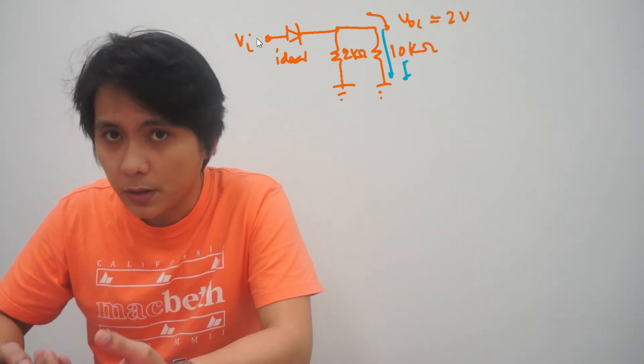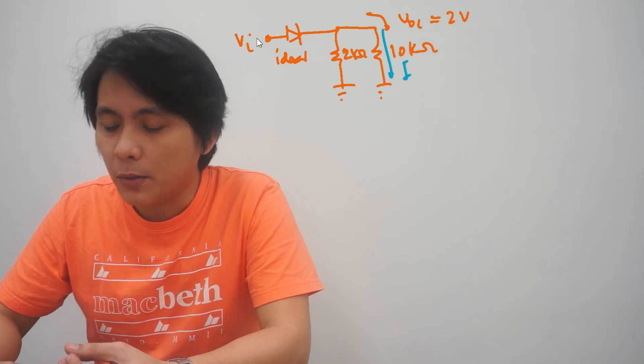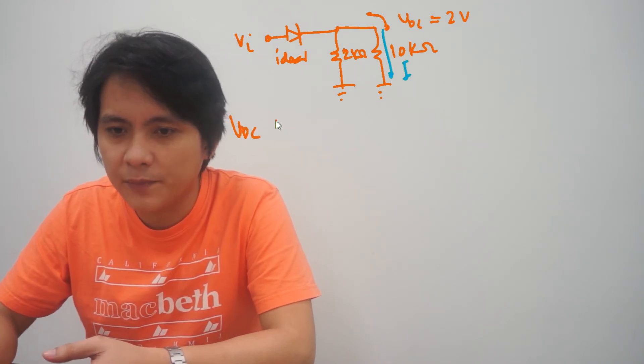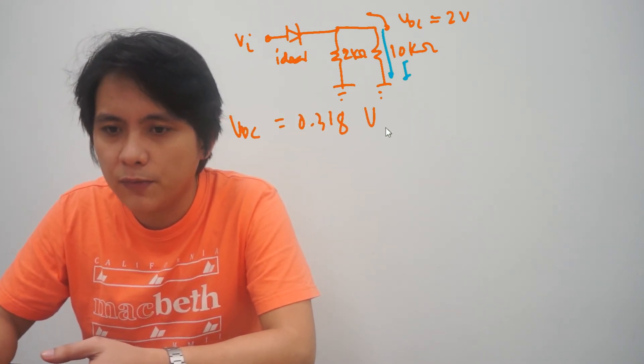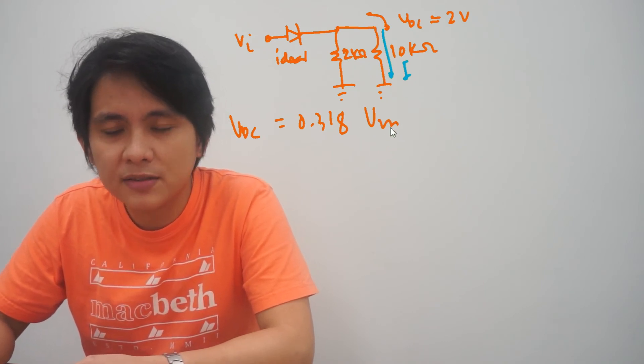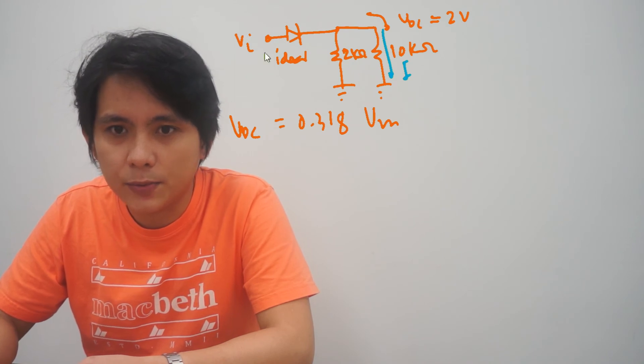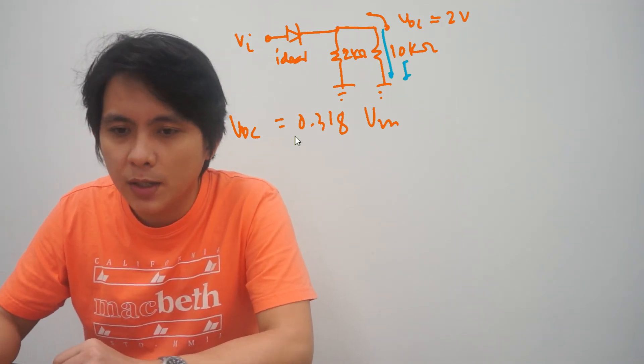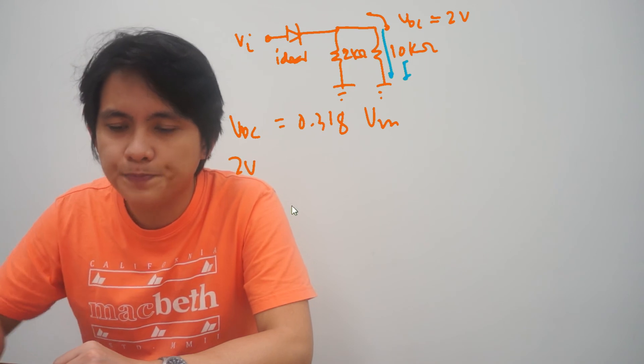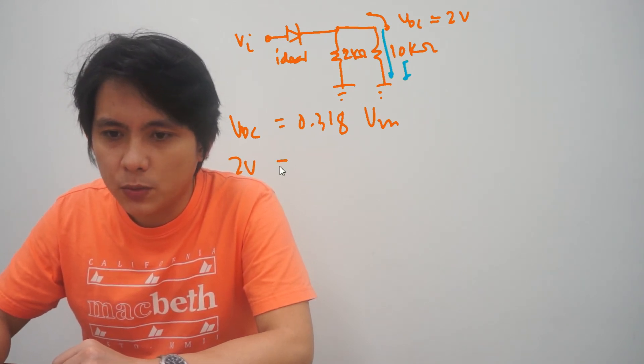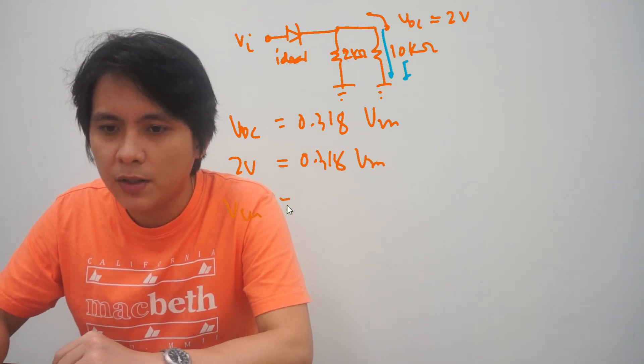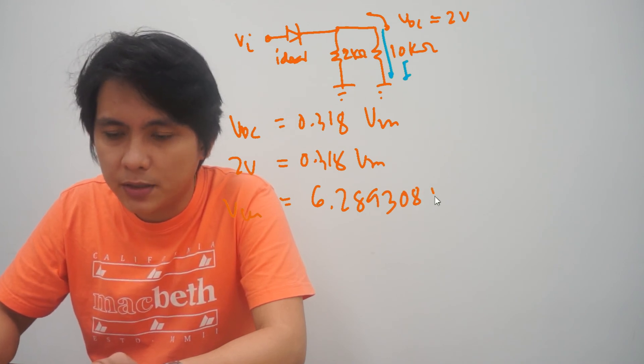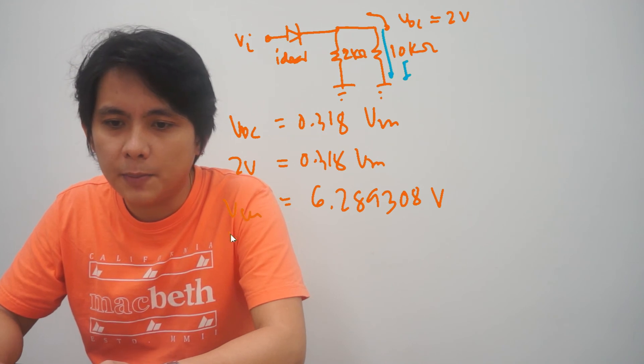Recalling the equation that relates the V input and the V DC, that's 0.318 of V max. V max is directly related to the V input. Since this is ideal, we need not use the V TH. So this is 2 volts, equivalent to 0.318 of V max. Our V max is 6.289308 volts, and this is AC voltage.